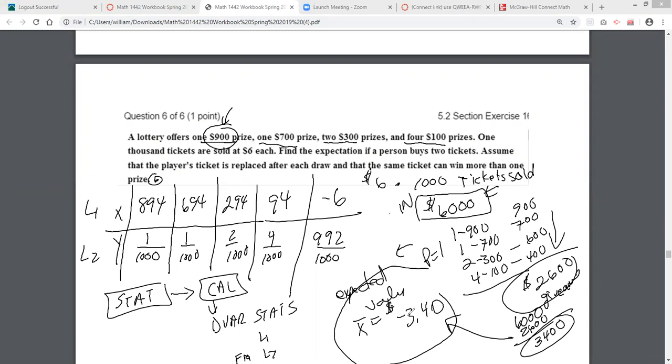If you bought all the tickets, you'd win $2,600. But you'd pay $6,000. In other words, you would have lost $3,400 if you bought all 1,000 tickets. For every ticket you buy, expect to lose $3.40.